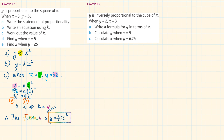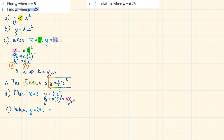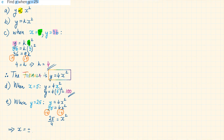We can use this formula to work out any missing values of Y or X from now on. Part D: find Y when X is equal to 5. Using the formula Y equals 4X squared, replacing X gives us Y equals 4 times 5 squared, and this is 100. Part E: find X when Y is equal to 25. Using the formula Y equals 4X squared and replacing Y, we have 25 equals 4X squared. Dividing both sides by 4, we have X squared equals 25 over 4. Square rooting this, we have plus or minus 5 over 2.